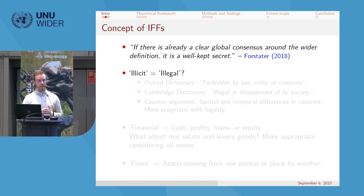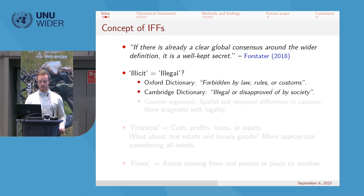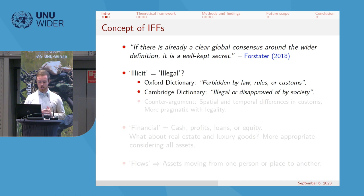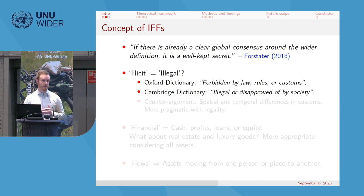The debate revolves around the word 'illicit' — specifically whether it should be equated with 'illegal.' The Oxford Dictionary defines illicit as 'forbidden by law, rules, or customs,' which is broader than just illegal. Cambridge Dictionary similarly defines it as 'illegal or disapproved of by society.'